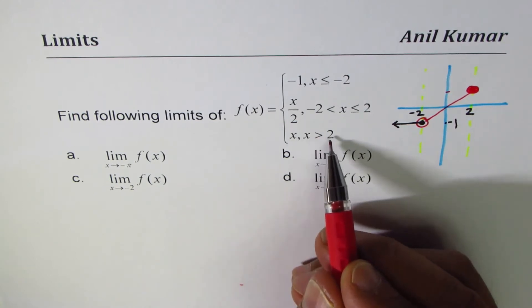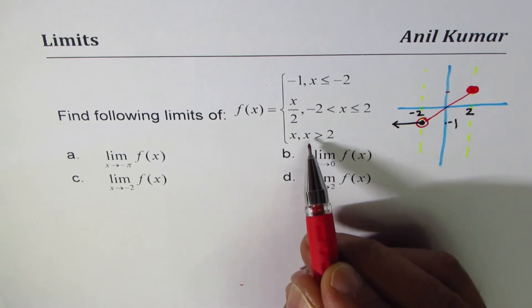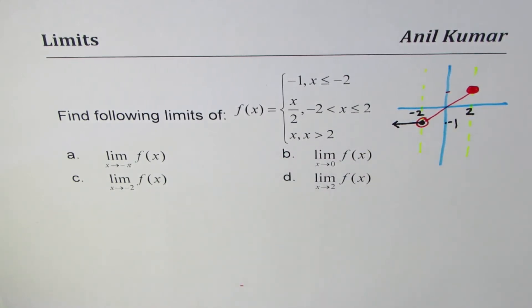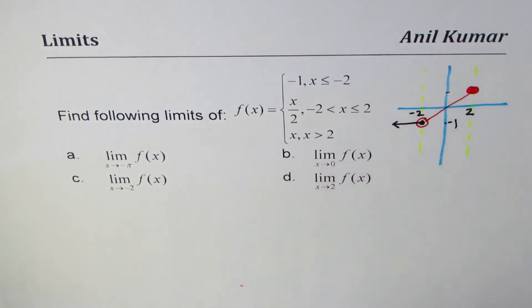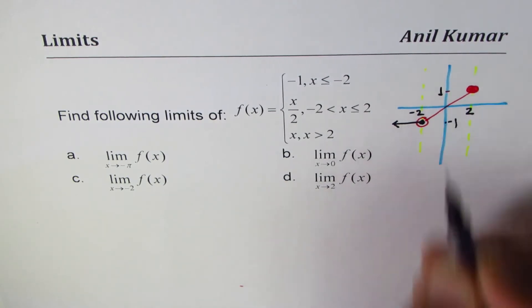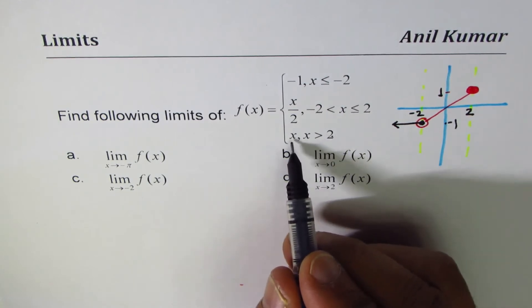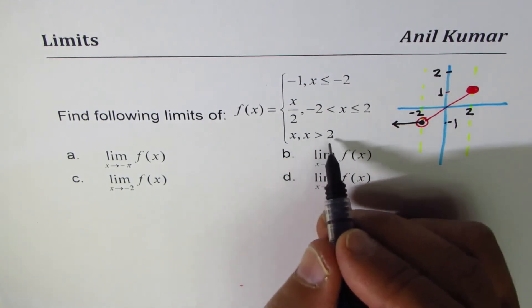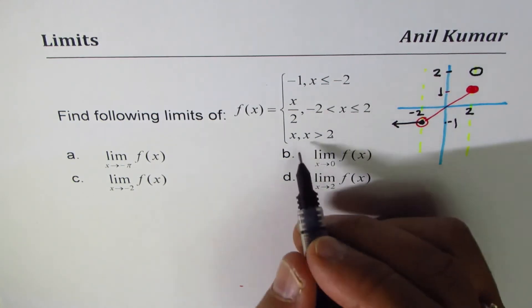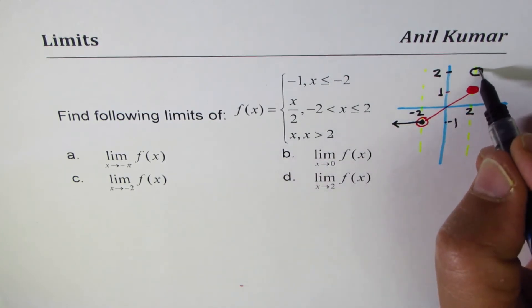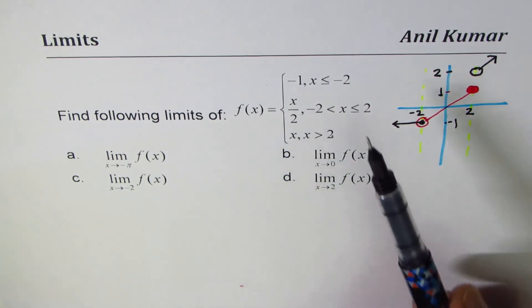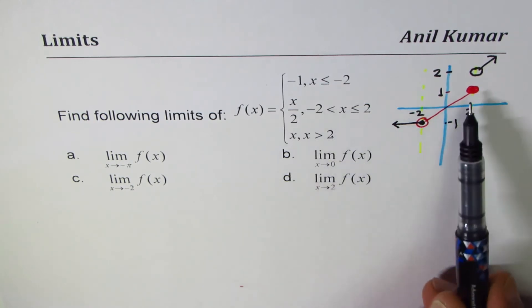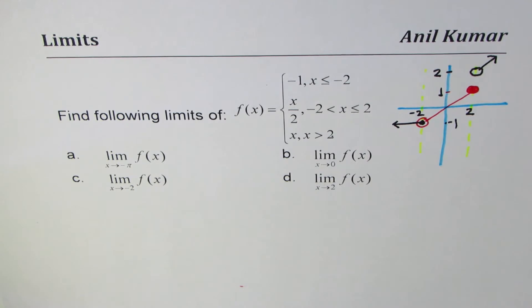For x greater than 2, the function equals x. At x = 2, the value would be 2, but since 2 is not included we draw an open circle there. At x = 3, the value is 3, continuing as a straight line upward. Notice the first two pieces share the same point (-2, -1), but the second and third pieces do not overlap — they produce a jump discontinuity.